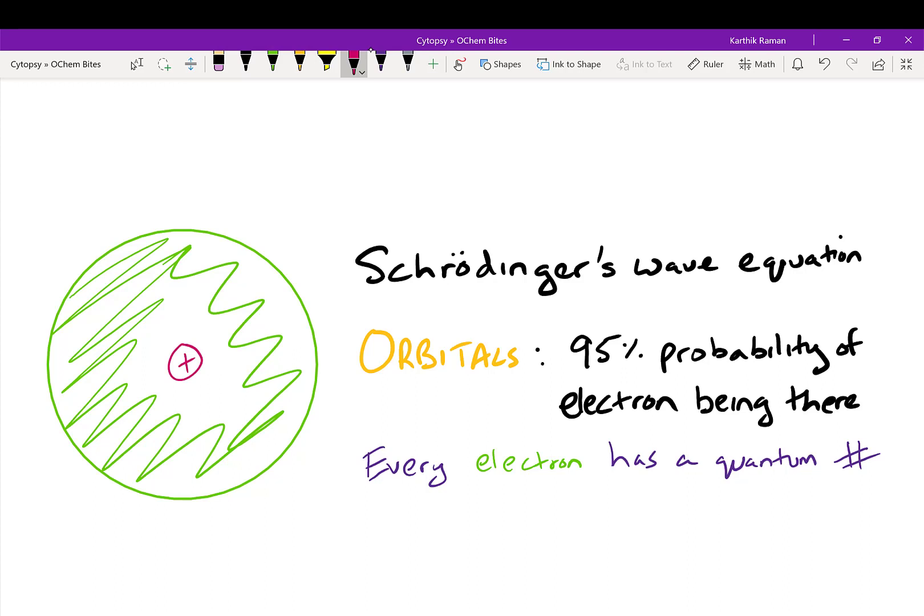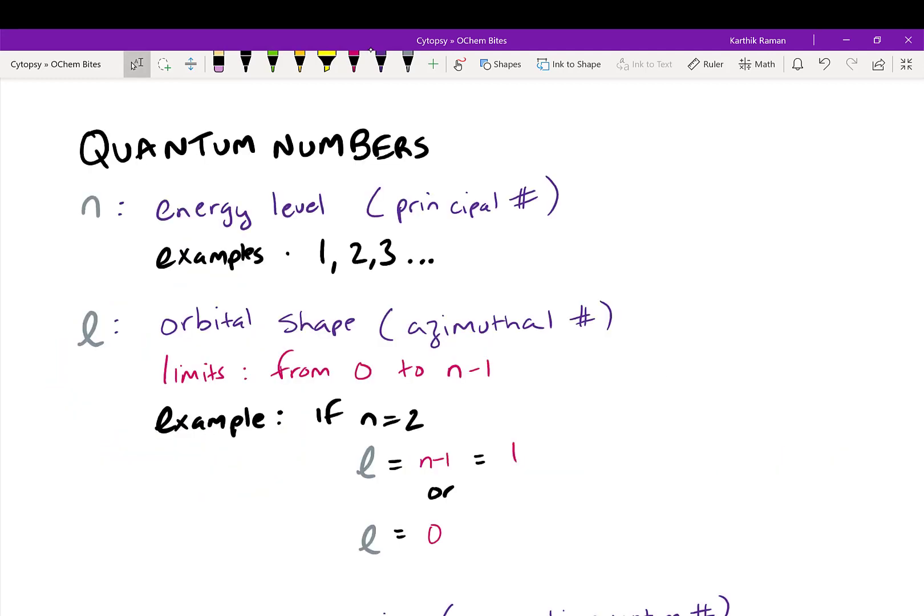The trick is that every electron has a quantum number, and this quantum number tells you where it's going to be with that 95% probability. So let's go through the quantum numbers. Just remember, every electron can be defined by a set of quantum numbers, and one of the first parts of it is called n. So this is the principal quantum number.